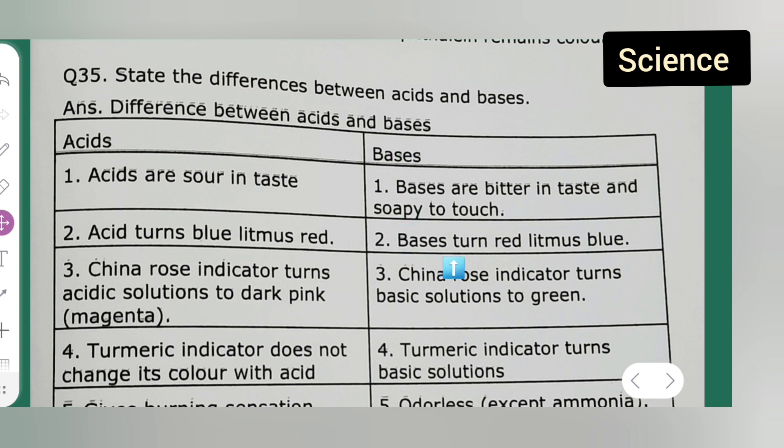Third point under acid: china rose indicator turns acidic solution to dark pink magenta. Here what happens in bases, the third point under bases: china rose indicator turns basic solution to green. So it will turn into green under bases and under acid it will turn into dark pink.